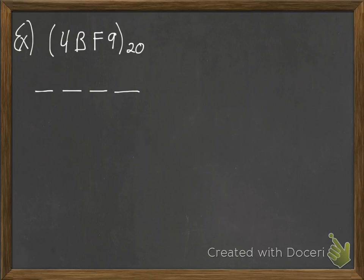Your place values in base 20 are again 1 for the first place, then the base, then the base squared which would be 400, then the base raised to the third power, in the case of 20, that would be 8000.